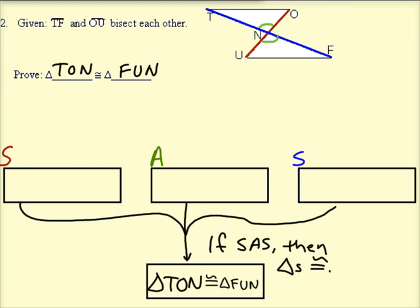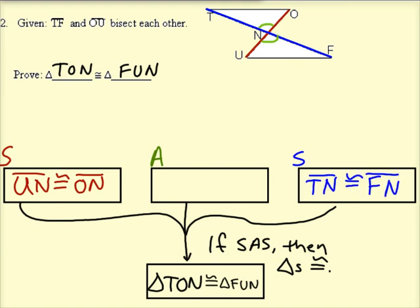So let's start with the reds. I know that U-N and O-N are congruent. Next, the other pair of sides, the blues, those blue sides are congruent. And finally, the angles, the angles up the middle, angle T-N-O and F-N-U.